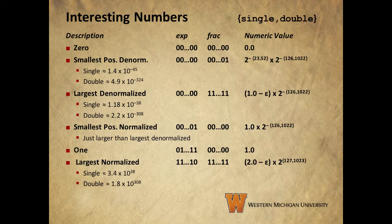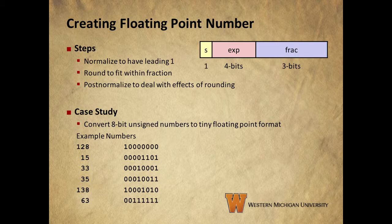This slide shows some interesting numbers and their bit representations as floats. I'd recommend pausing the video and taking a look at these, making sure you understand what these numbers are and what they represent. Now let's take some examples all the way through the floating point encoding process. We'll use the 8-bit tiny float format that we talked about in the last videos. First, we normalize to have a leading one, then round to fit within the frac field, and post-normalize to fix the effects of rounding if necessary.